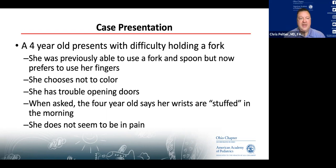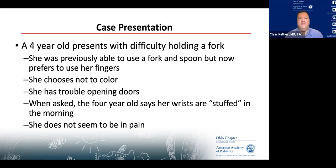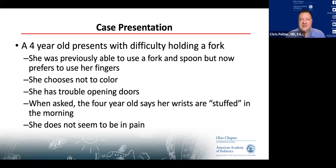Our next case is a little four-year-old whose parents note she's having difficulty holding a fork. She was previously able to use a fork and spoon, but now prefers to use her fingers. She chooses not to color, has trouble opening doors, and when you ask her, she says her wrists are 'stuffed' in the morning. She does not seem to be in any pain.